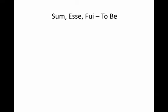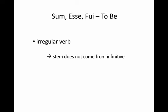First of all, if you remember, this is one of our irregular verbs in Latin, and that's why it only has three principal parts. The stem for our forms does not come from the infinitive like most of our verbs. Usually we go to the second principal part, drop off our ending, and that's our stem.